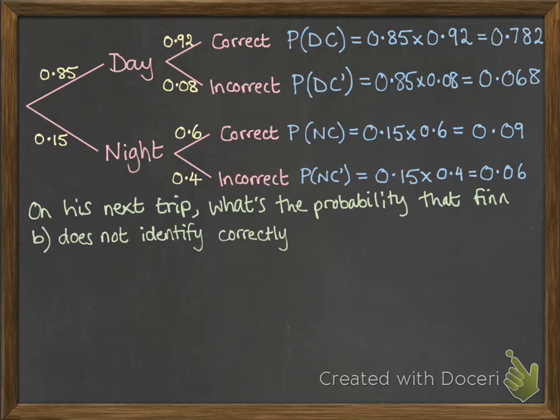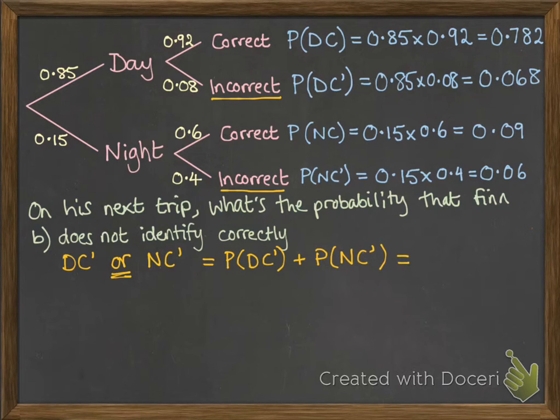Okay, what about if he, on his next trip, he doesn't identify the vessels correctly? Well, that's these two possibilities. He could either go at day and be incorrect or go at night and be incorrect. So we've got these two. And remember when we have an or, that means we're going to add those things together. So the probability of each of those things added together. So we read them off from the top and put them together.